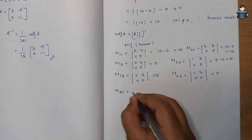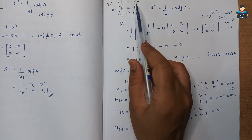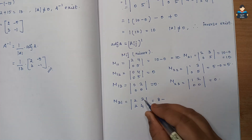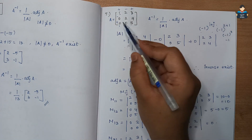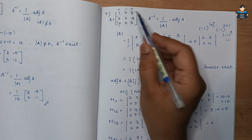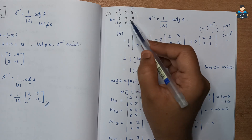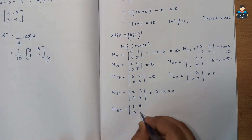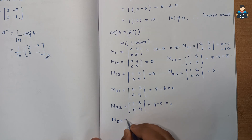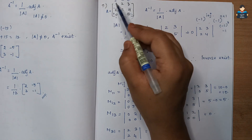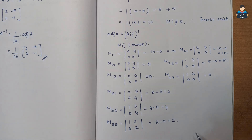M31: delete row 3 and column 1, elements are 2, 3, 2, 4, giving 2 times 4 minus 2 times 3, that is 8 minus 6 which is 2. M32: delete row 3 and column 2, elements are 1, 3, 0, 4, giving 4 minus 0 which is 4. M33: delete row 3 and column 3, elements are 1, 2, 0, 2, giving 2 minus 0 which is 2. All minors found.